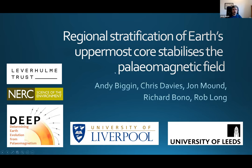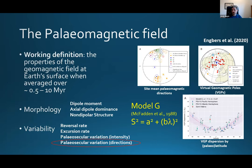Hopefully that will help hammer home some of the points I'm trying to make here. Starting off, I've got a working definition of the paleomagnetic field and a bunch of properties which define the paleomagnetic field. In this talk, I'm really focusing on just this lower property: paleosecular variation, in terms of what the variability of the field can tell us over timescales of hundreds of thousands of years and longer.